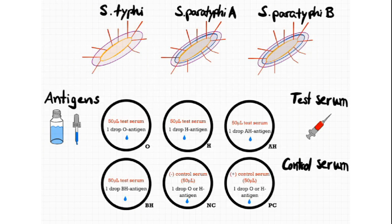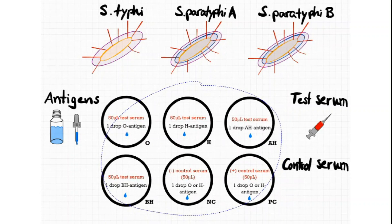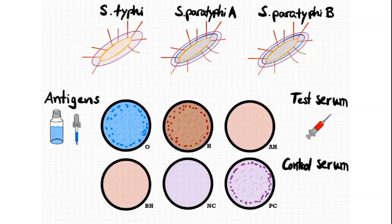After we added everything, we rock the slide for one minute. Here we can see agglutination for the O and H antigen if you compare it to the positive control, so the test is positive for those two antigens. Normally these antigens are included in the test kit together with the control serum as glass pipette dropper bottles. To make it more clear, I drew the bacteria again and took the antigens from them.